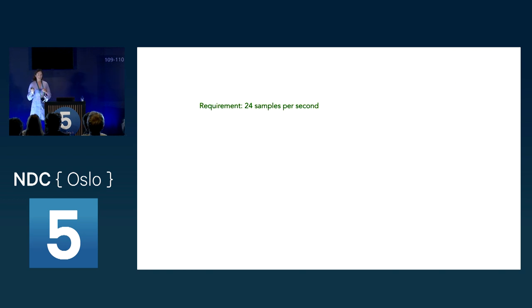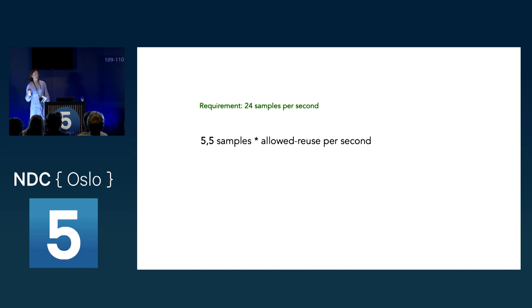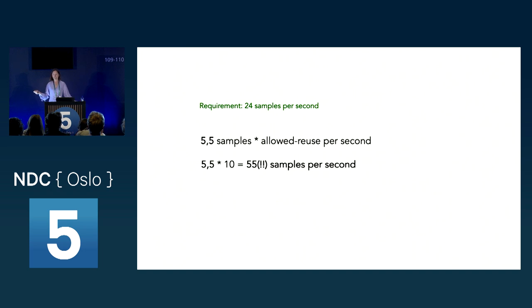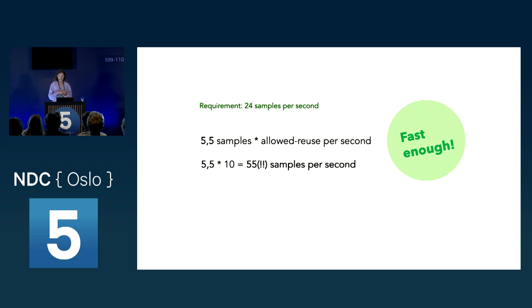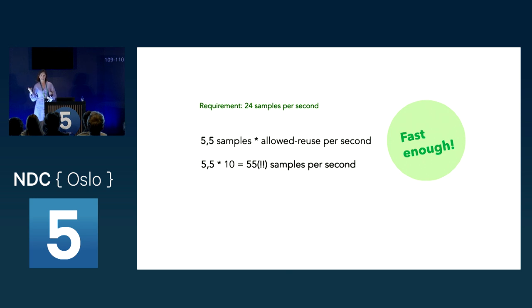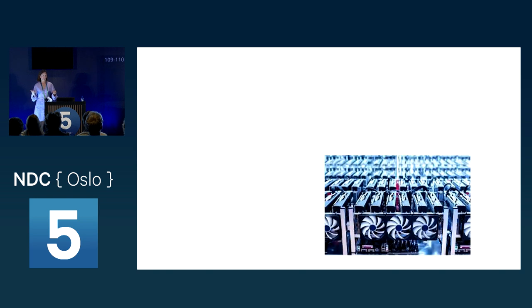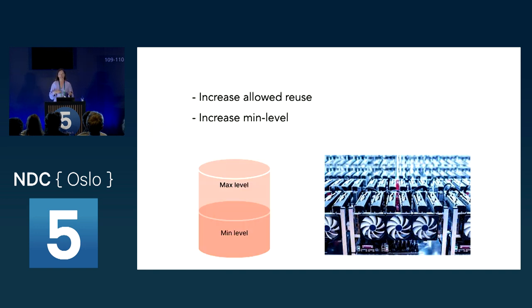Where do we end up? With 5.5 samples per second and allowing reuse up to 10 times, that gives us 55 samples per second — more than the 25 we need. Finally we have something fast enough. And if we wanted to scale up and train in the cloud with more GPU power, we could just increase the allowed reuse and minimum data level, and it would still work — this approach scales.